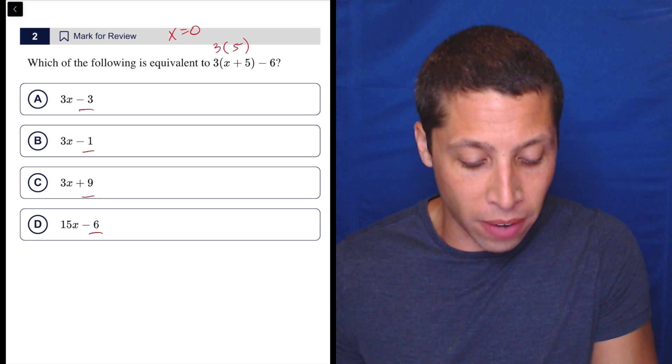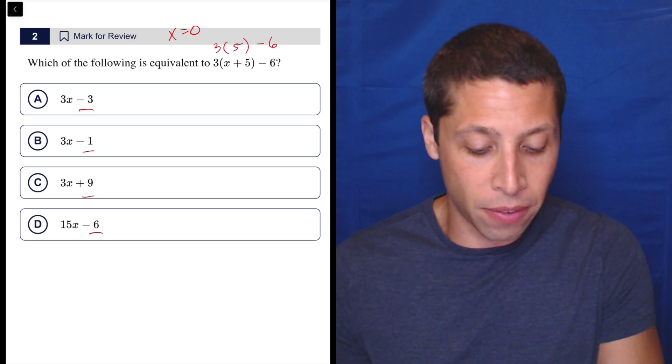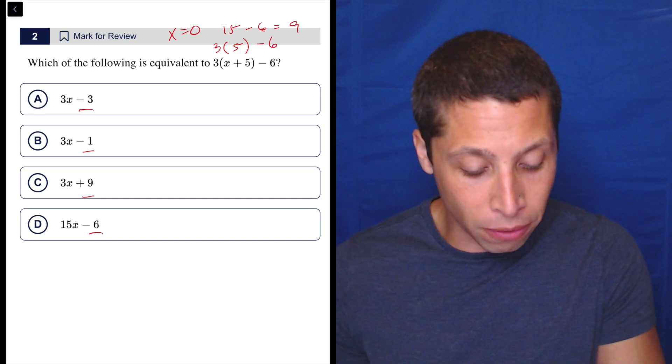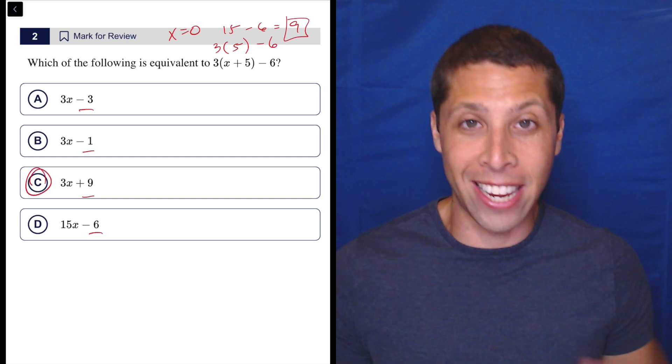This is three times zero plus five is five, three times five is fifteen, fifteen minus six is nine. That's it. I'm looking for a nine. Which one has a nine? C. That's it.